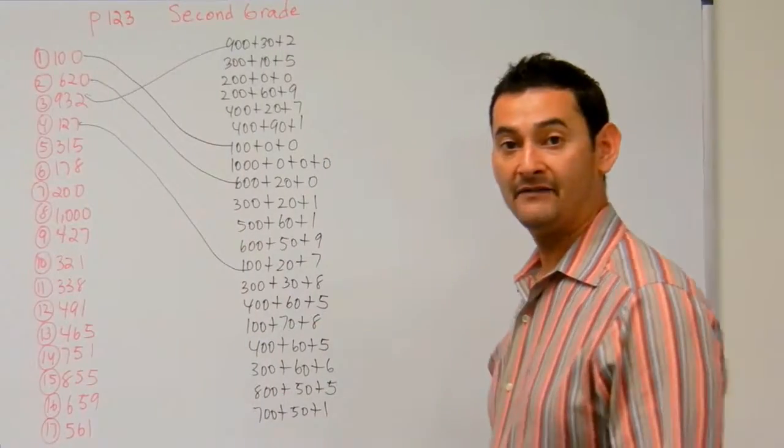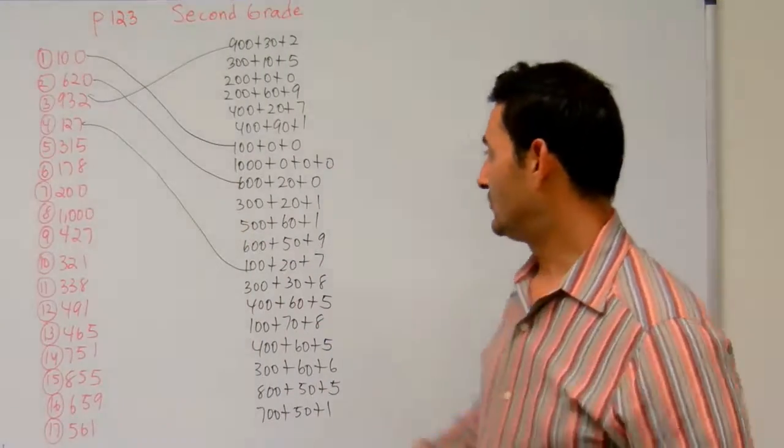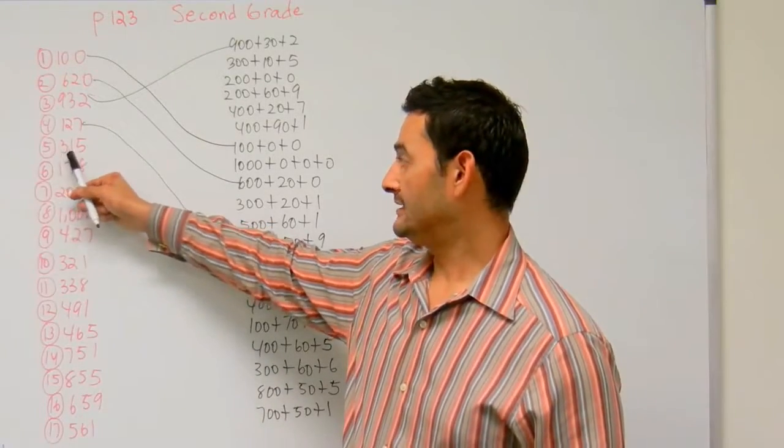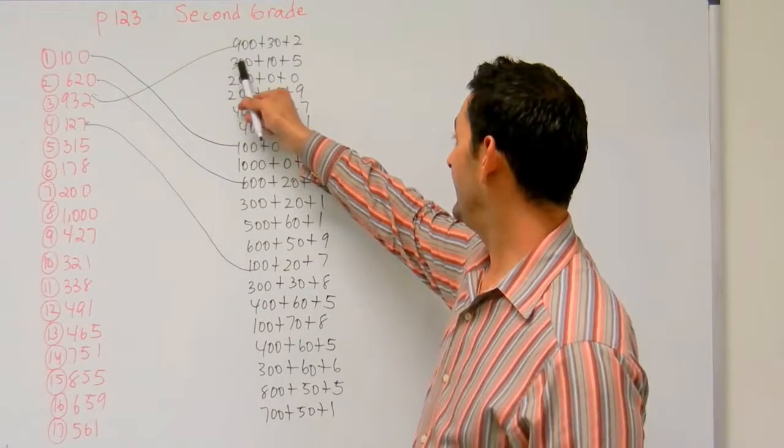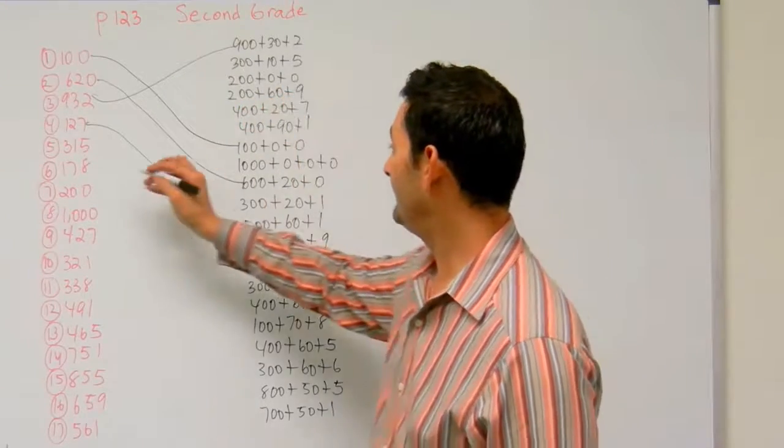Number 5, I've got 315. So I'm looking for 300 plus 10 plus 5. So I'm looking for 300. There's one right there. 300 plus 10 plus 5. Yep, that's it.